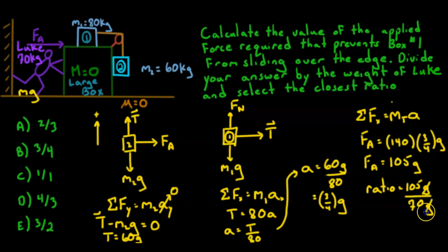And that's why I left g until the end, because I kind of knew it was going to cancel there. But even if you subbed it in, you'd be fine. And so 105 divided by 70 is approximately 3 halves, or 1.5. So our answer is E.